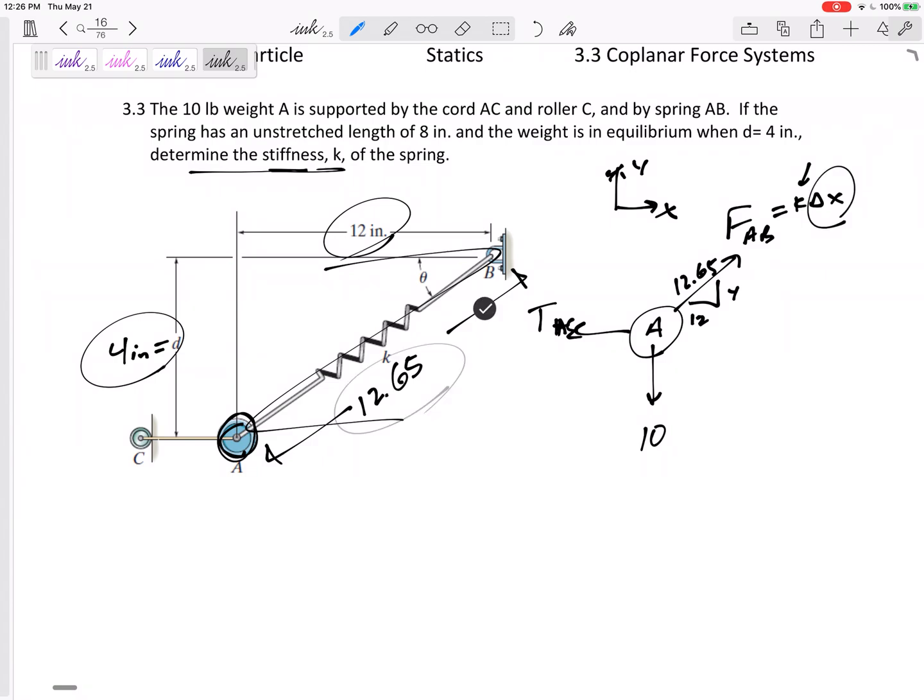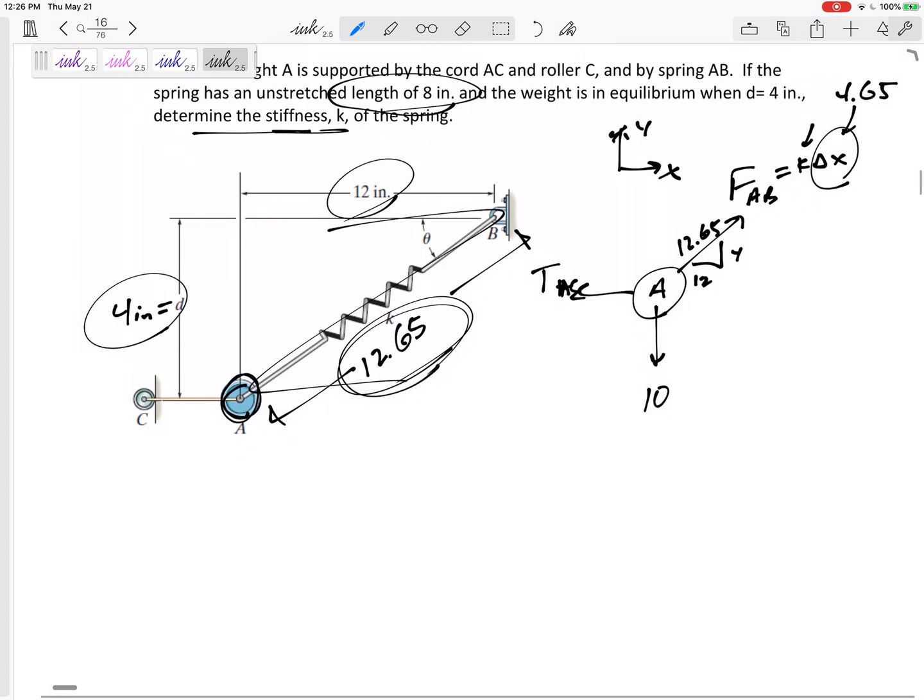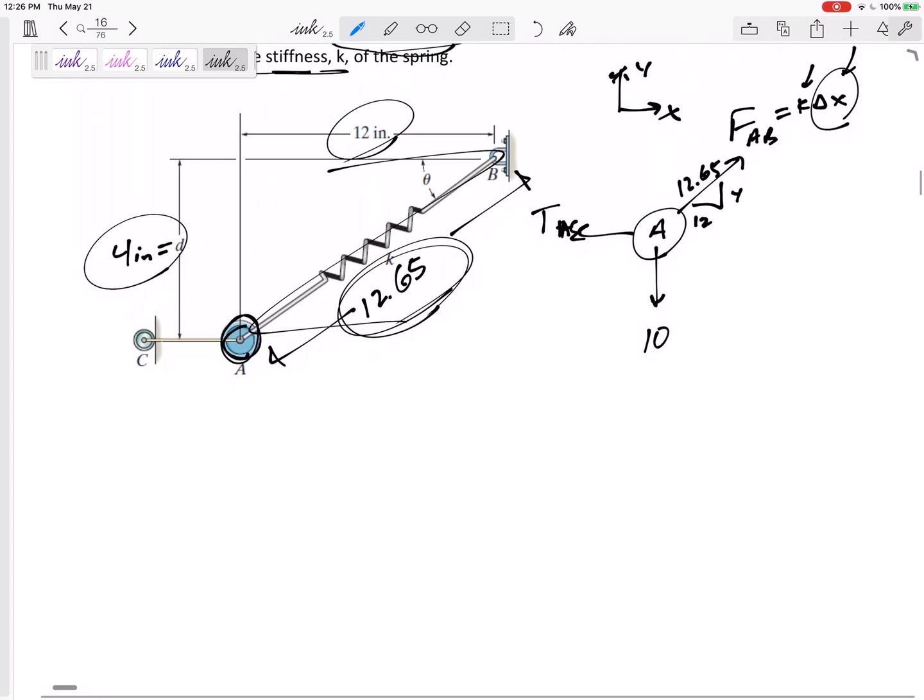12.65, that is not the, that's not what I'm plugging right there. Delta X is the stretch. If its current length is 12.65 and its unstretched length was 8, then that delta X is 4.65, right? That delta X would be 4.65.